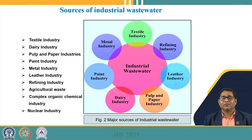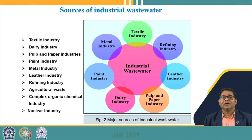As a result, the effluent generated from these industries may contain various types of inorganic impurities, organic impurities, coloring compounds, dyes, and heavy metals. The character of water generated from industry depends upon the type of raw material, the type of acids and alkali used, and accordingly the effluent characteristics are generated. The characteristic of this wastewater varies from industry to industry, depending upon its process and operation.